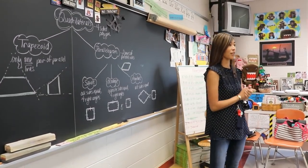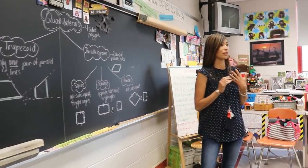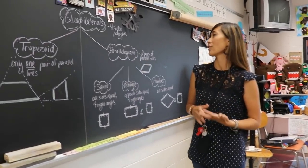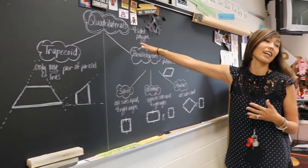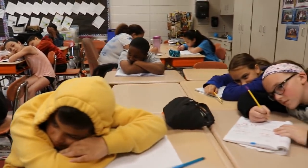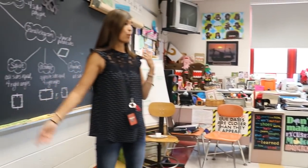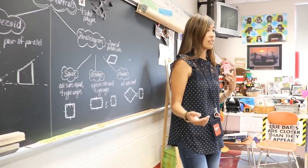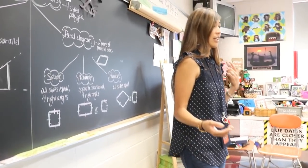All right, so boys and girls, today we are going to do a lesson on quadrilaterals. Quadrilaterals are polygons that have how many sides? Four. Good. There are different types of ways we can classify quadrilaterals. One way is a trapezoid. A trapezoid is a quadrilateral that has one pair of parallel lines and the other pair of lines intersect.